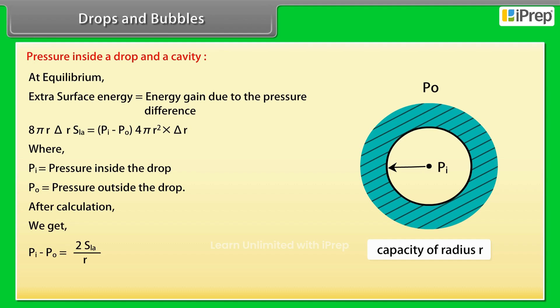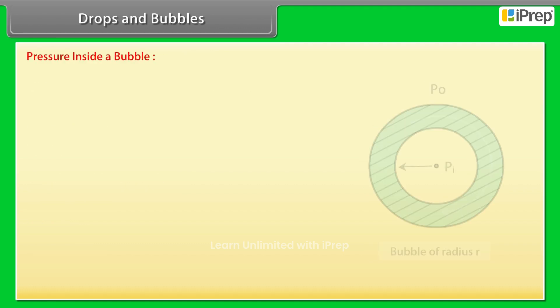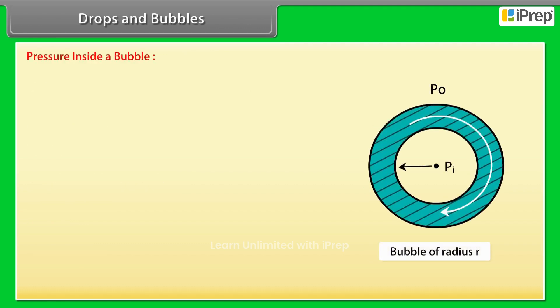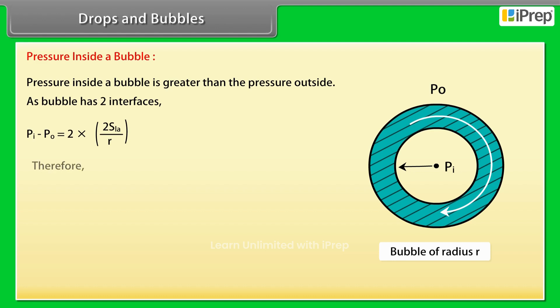Pressure inside a bubble. Pressure inside a bubble is greater than the pressure outside. As bubble has two interfaces, Pi - Po is equal to 2 × (2S/r). Therefore, Pi - Po is equal to 4S/r.